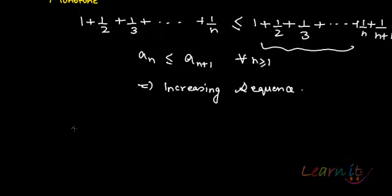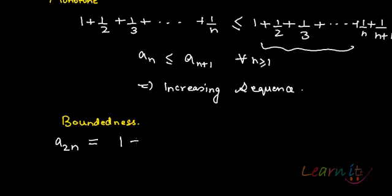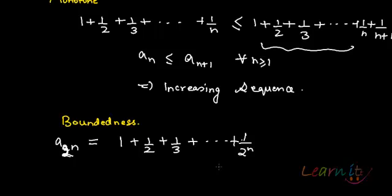Now let us check boundedness. To do that, let me look at the term a_{2^n} — that is, the partial sum up to 2^n terms. This term will be 1 + 1/2 + 1/3 + ... up to 1/(2^n). Here 2n means 2 to the power n, so n is being taken as 2^n. We will see why we are doing this shortly.